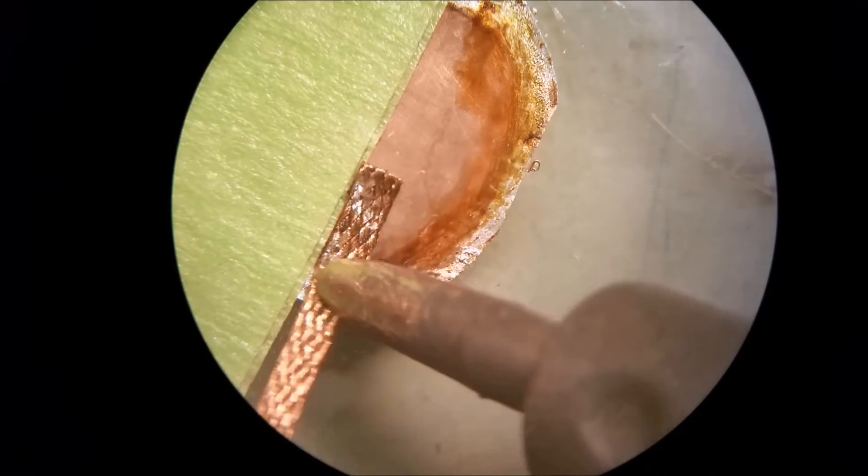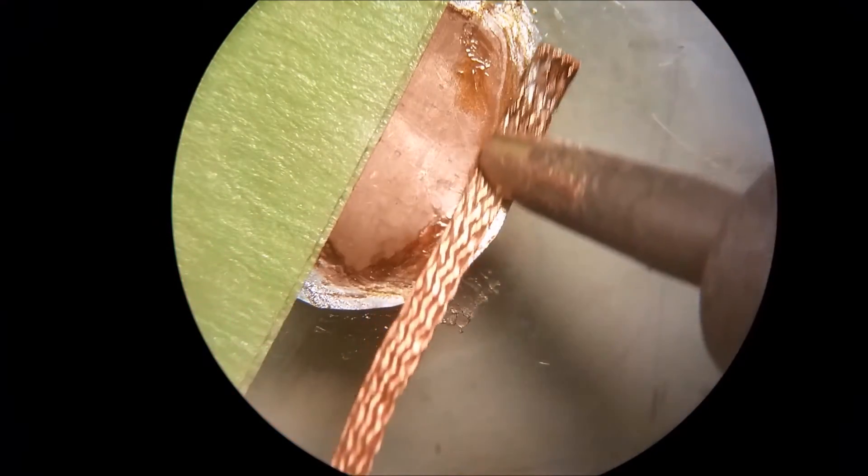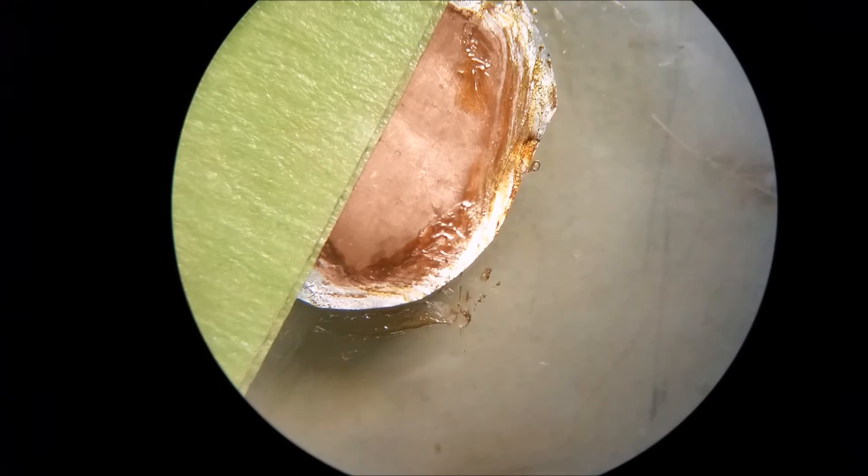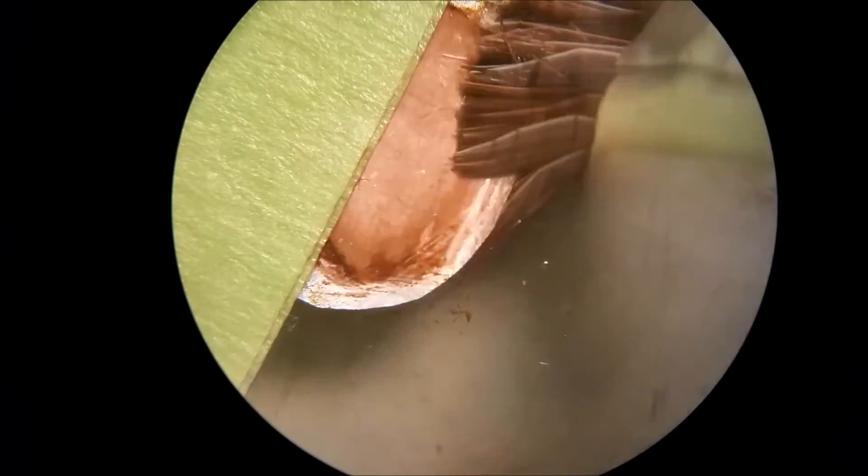When you actually go to solder this on the board, around the edges that we cleaned off, the solder will wick up underneath it and should hold it down along with the glue that we're going to put on it. Alright, get her cleaned up, use some tech wipes.